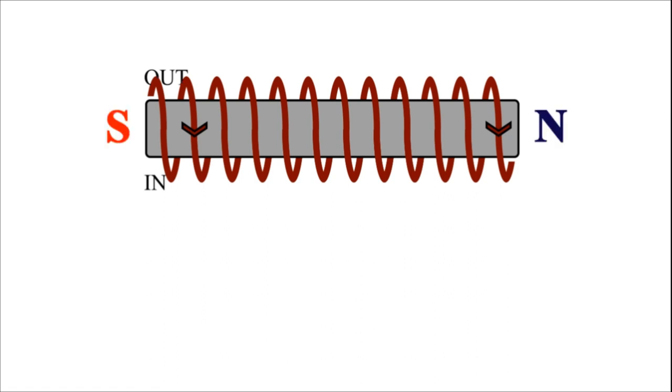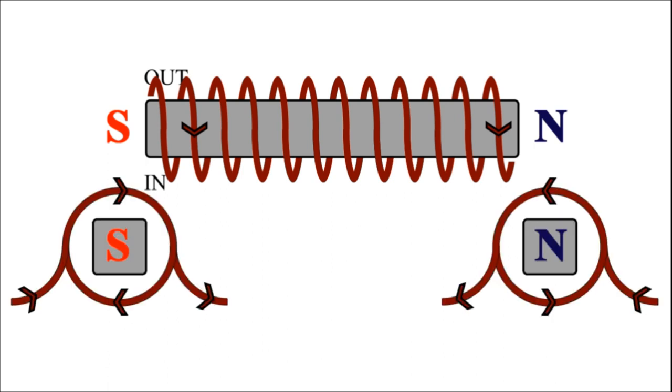then the left side of the iron rod would have a south pole and the right side would have a north pole, because of the right hand rule.